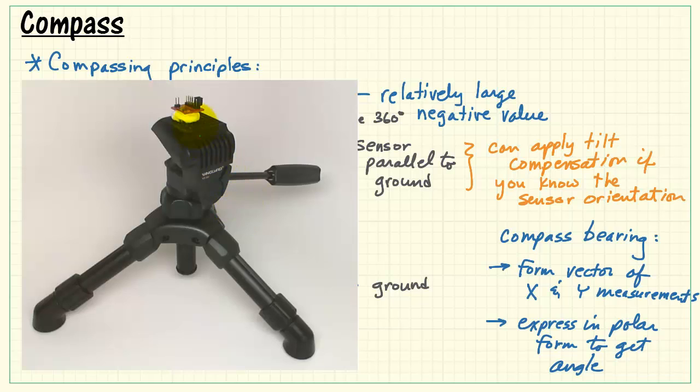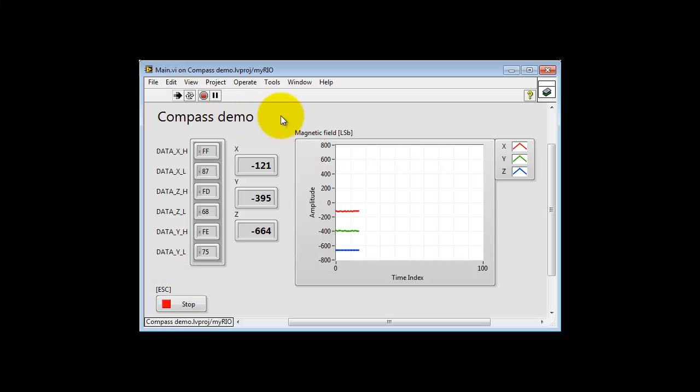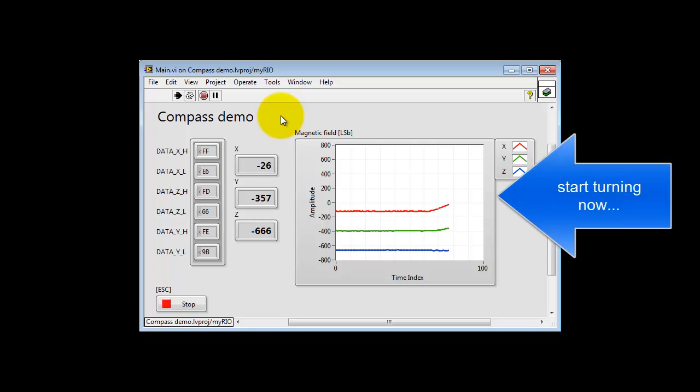Now when you rotate the sensor 360 degrees, I'm using a little camera tripod here to do that, what you'll find is that when the sensor is level with the ground, we expect X and Y to trace out sinusoidal paths. I'll show you what I mean here. I'm turning it by hand. We see X starting to increase.